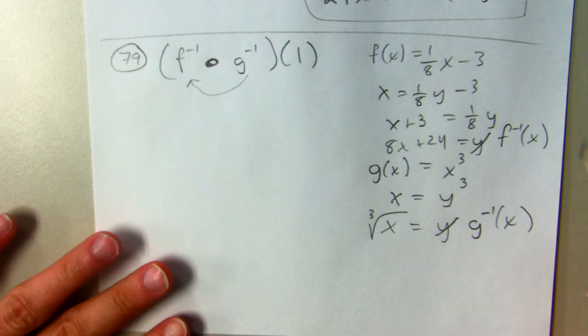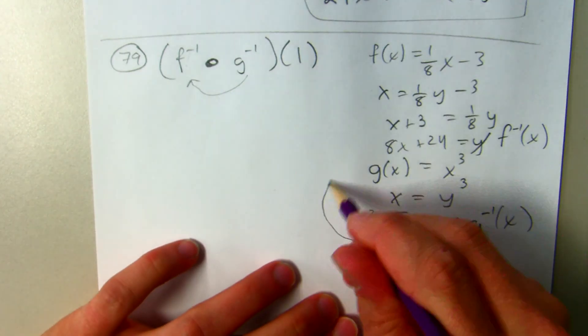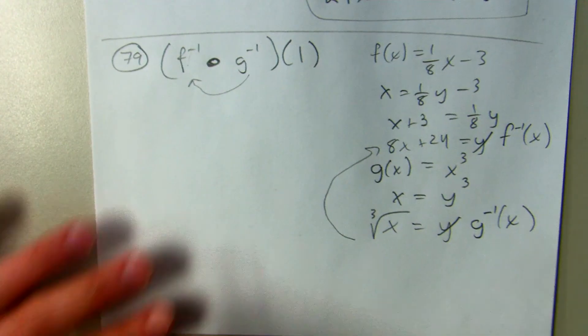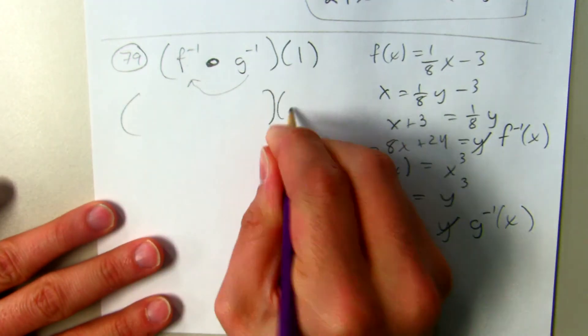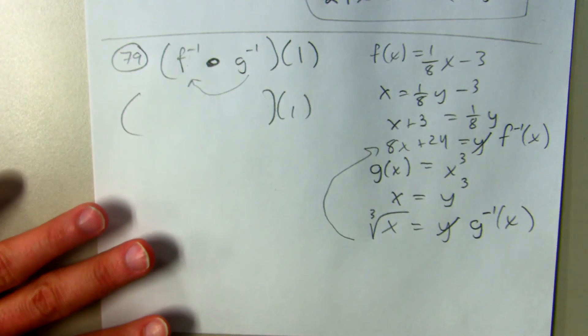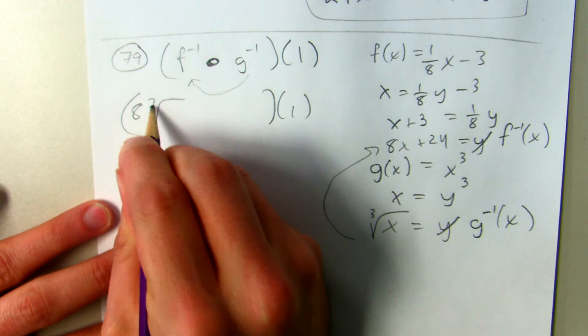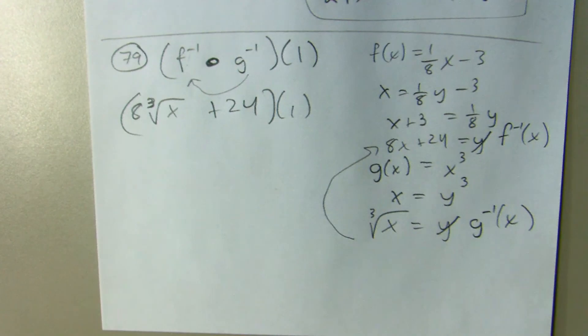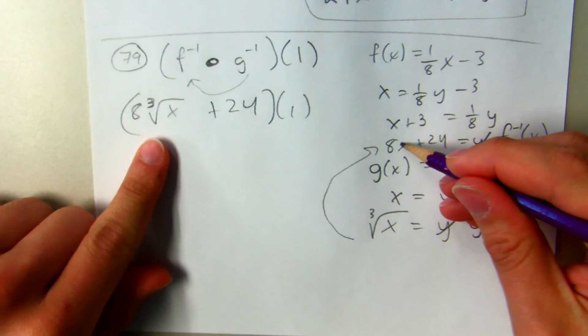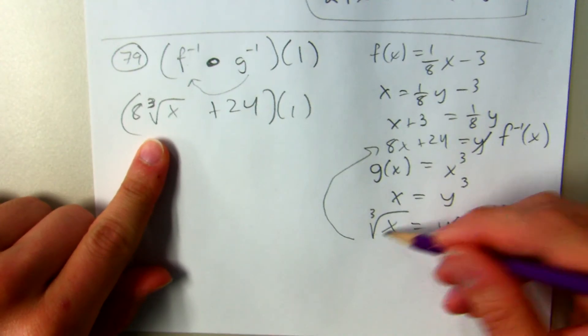So I should be plugging this into this. Instead of 8X plus 24, I get 8 cube root of X plus 24. The X I replace with the inverse of G.